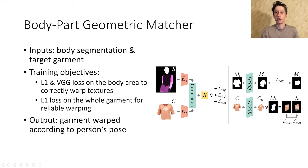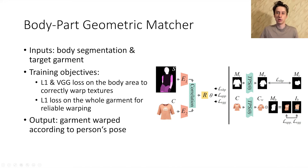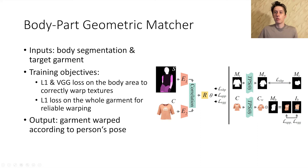Let's first look at the body part geometric matching module. Its purpose is to generate a garment warped according to the person's pose in the original image. The main idea behind our architecture, which you can see in the figure on the right, entails the simplification of inputs compared to other works utilizing a similarly intended module. The module only requires the target clothing and human body segmentation to reliably warp the garment without producing artifacts. The quality of warping is also in part due to our matching technique, which is enforced by multiple losses. We put a big emphasis on conditioning the warping procedure on the body instead of the whole garment.